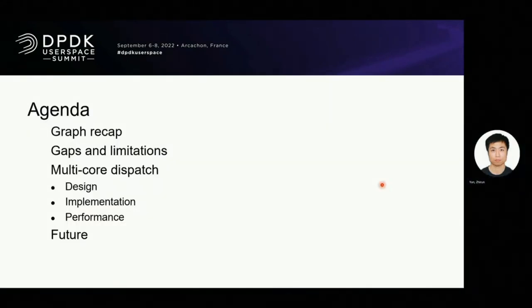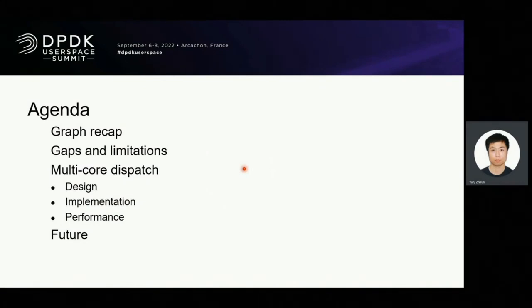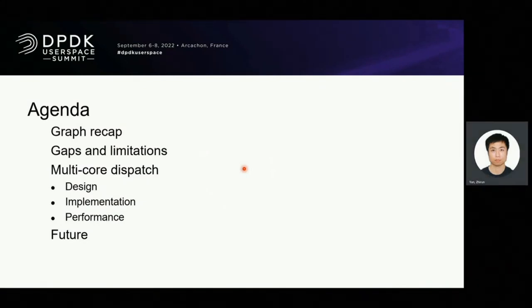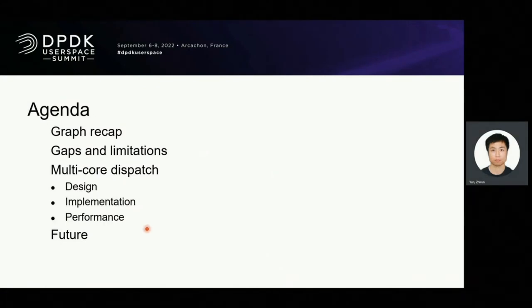This is our agenda. First, I will do a quick recap so that everyone could understand the basic information about Graph Library. Next, I will show the gaps and limitations that we are experiencing when using the Graph. Then, I will explain the multi-core dispatch to solve it as well as design technical details and performance data. Finally, it's about our next step in future.